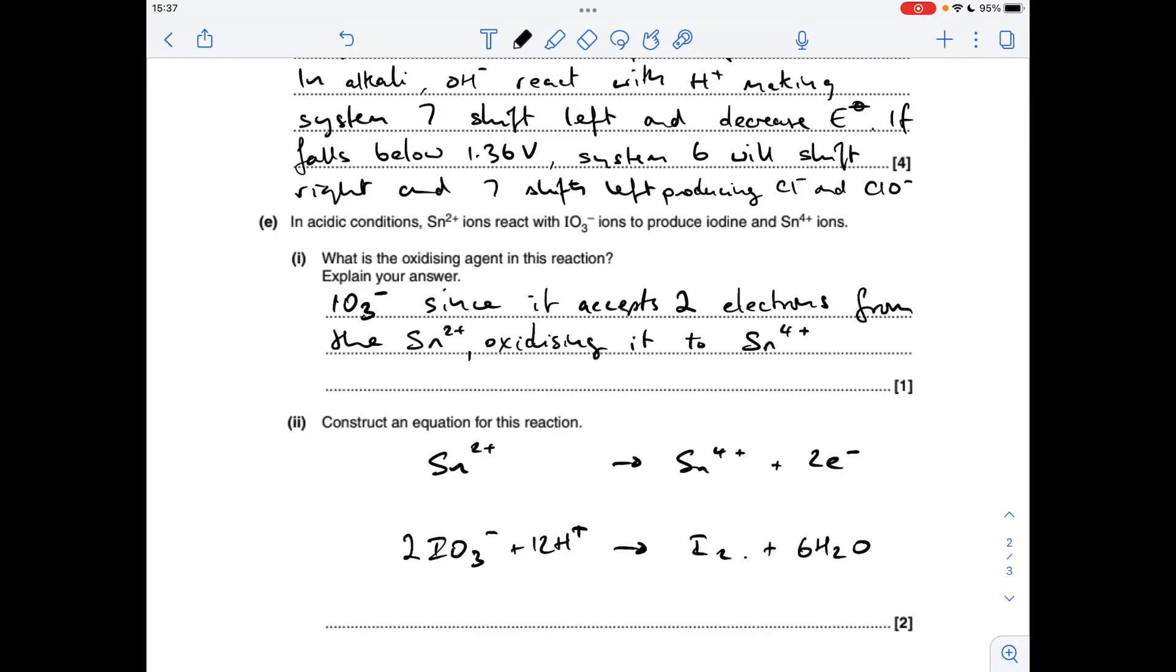So the last thing I'm going to do is put some electrons in to make sure that the charge is the same on each side. You can see that we've got 10+ on the left and no charge on the right, so I need to bring the left-hand side down to no charge, so I need 10 electrons on the left.